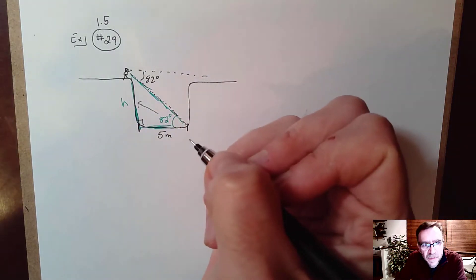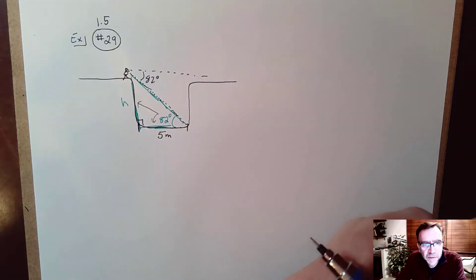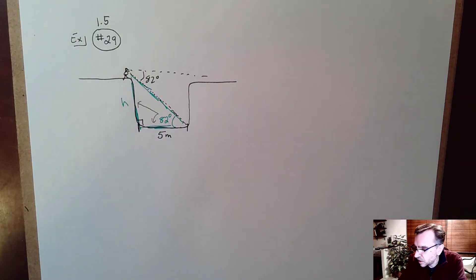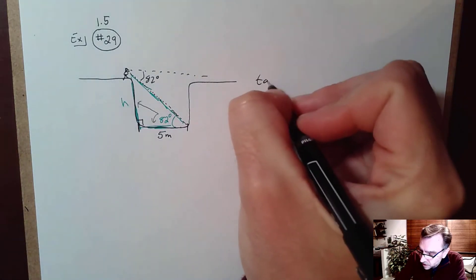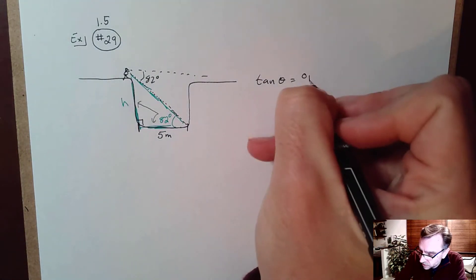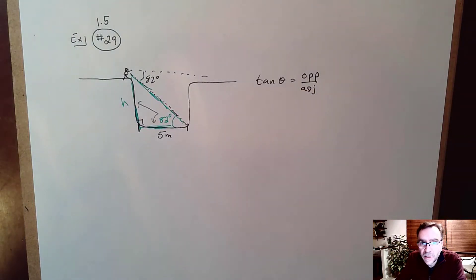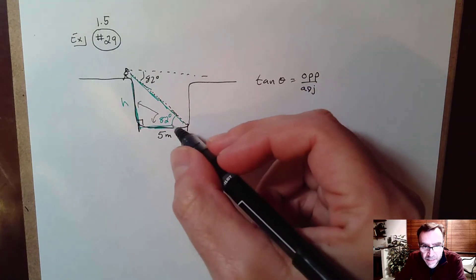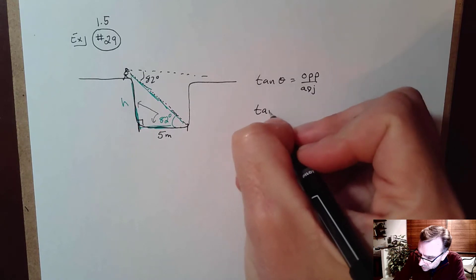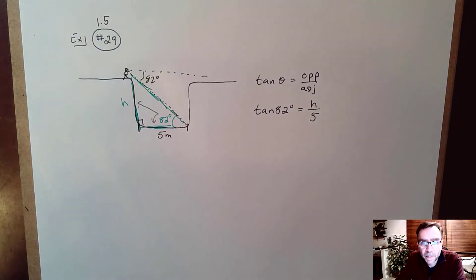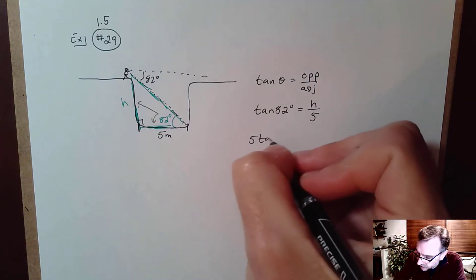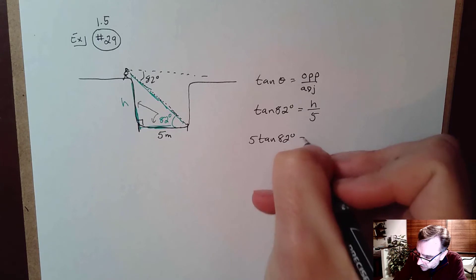The trig function that associates opposite with adjacent is tangent. Tangent of any angle is defined to be opposite over adjacent. So in this case, tangent of 82 degrees equals H over 5. Cross-multiplying: 5 times tangent of 82 degrees equals H.